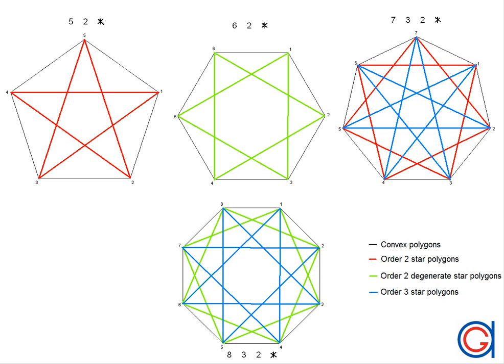Similarly with the hexagon, 6 divided by 2 equals 3, so the only possible order is 2 again. But this time 2 is a divisor of 6, therefore it is a degenerate star polygon. With the heptagon, which is a 7-sided polygon, 7 divided by 2 equals 3.5, so in this case there are 2 possibilities: order 2 and order 3. Neither of these orders are divisors of 7, so both are regular star polygons.